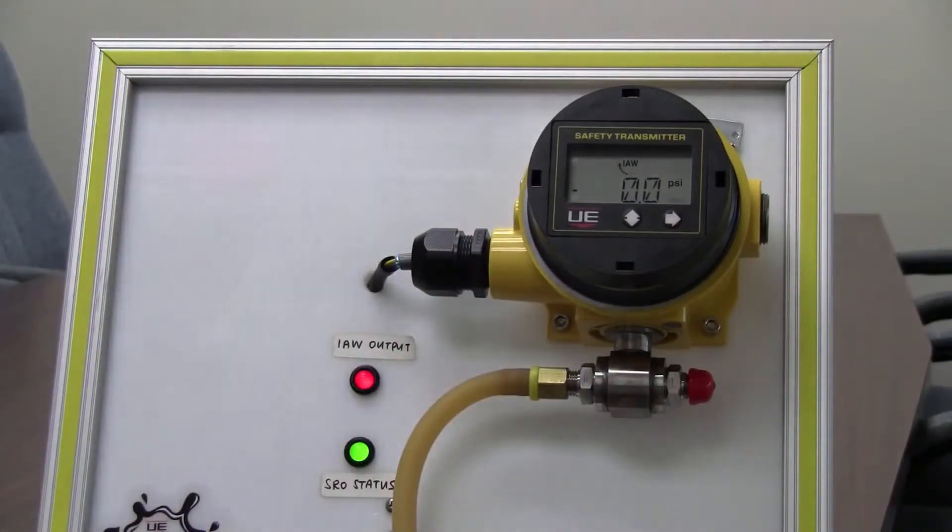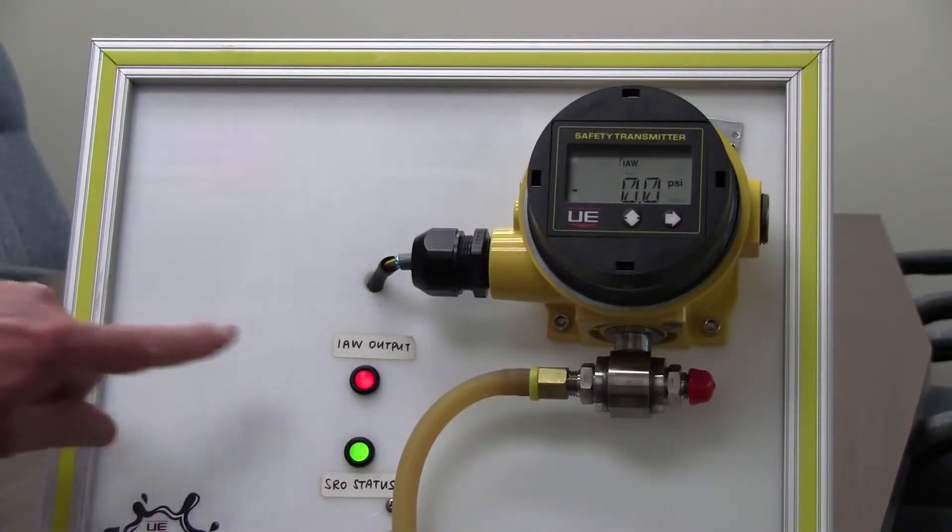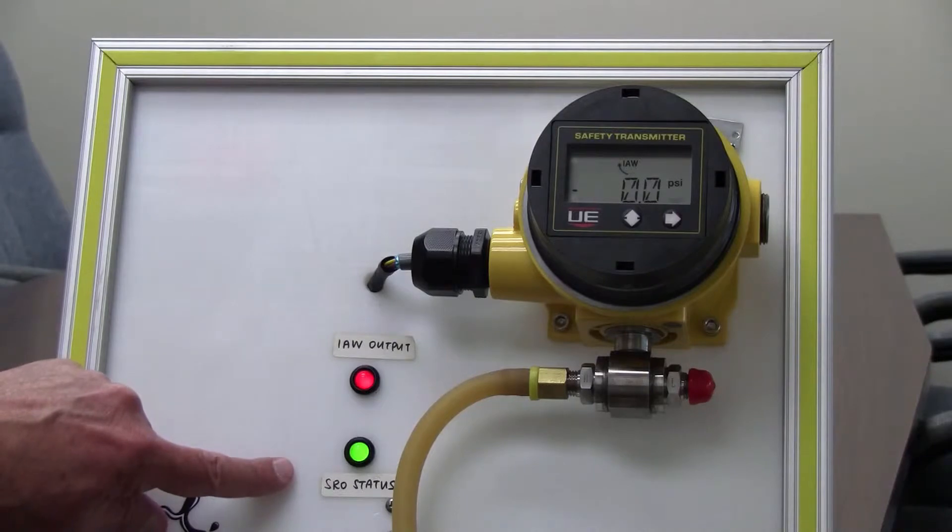On my demo notice that I have two indicating lights. One is the I am working output which is the health status of the product and the green light is the safety relay output status which is a programmable set point and it's indicating that that has not yet been reached.